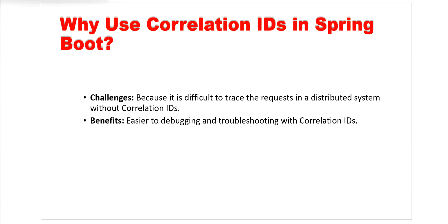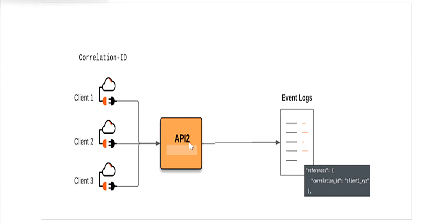The main benefit of using correlation ID is that we can easily debug and troubleshoot. For example, if we have one API being called by multiple clients, for each HTTP request one correlation ID will be generated automatically and logged into our log file. This way we can uniquely identify each request, since each HTTP request gets a new correlation ID.